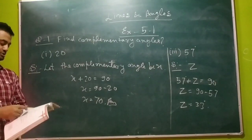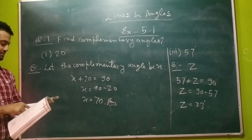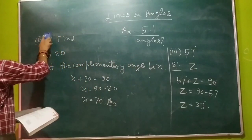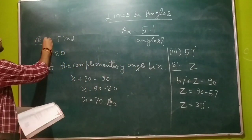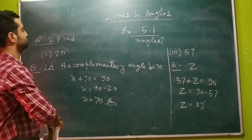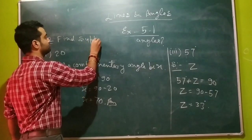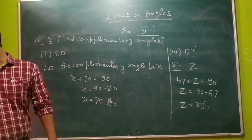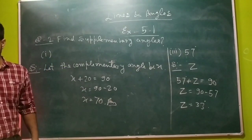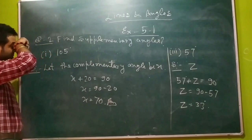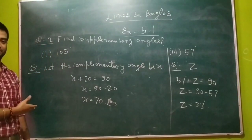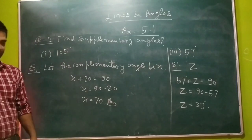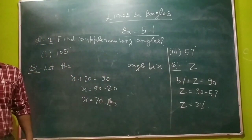Now we are moving to our second question, which is asking us to find the supplements of the following angles. The first question is asking us to find the supplement of 105 degrees. The same way we can find out the supplementary angles as we find out the complementary angles. Suppose the supplementary angle of 105 degrees is x.